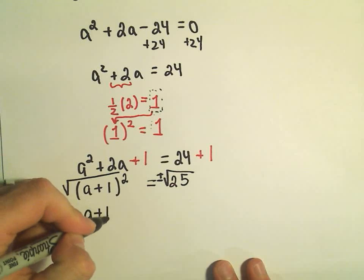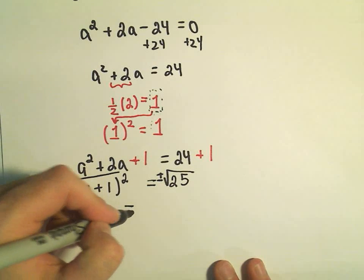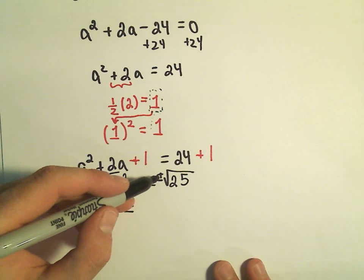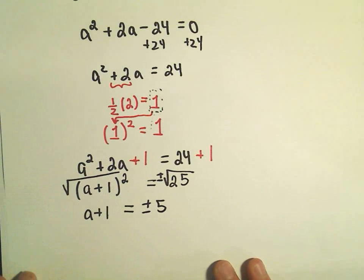On the left side, since we took the square root of something squared, we'll just write that as a plus 1. On the right side, we have the positive and negative square root of 25, which is simply going to be positive and negative 5.